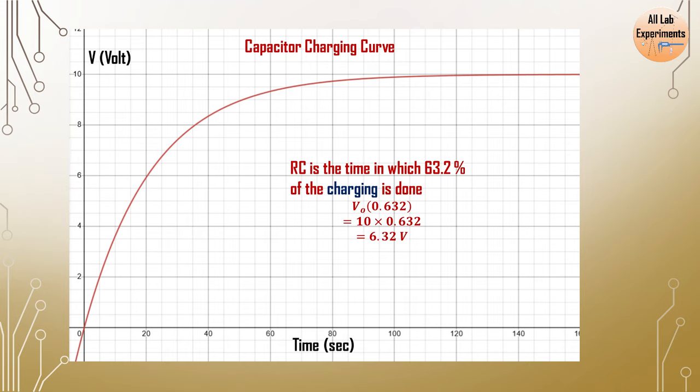By definition the RC time constant is the time in which 63.2 percent of the charging is done. It means if you have applied 10 volt potential difference across your capacitor, so 6.32 volt potential difference will be developed in one RC time.